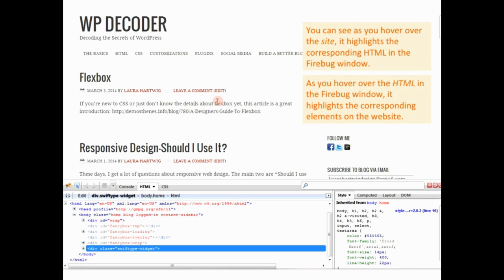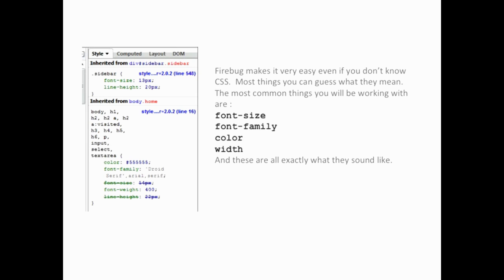Firebug makes it very easy. And like I said, the styles in CSS are very simple to figure out even if you don't know any CSS at all. Font size — that's obviously going to control the size of your font. Font family — that's the name of the font you're using. Color is the color of the font or whatever it is. Width is the width. It's very basic and easy to figure out.